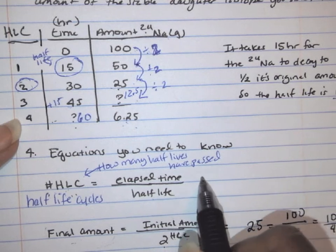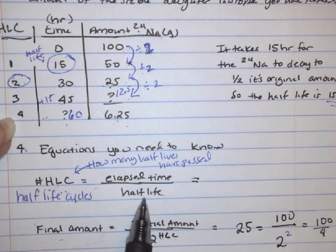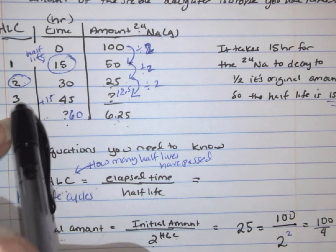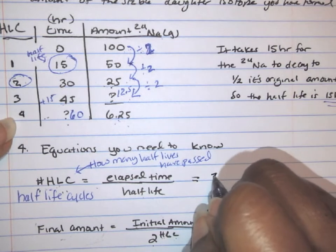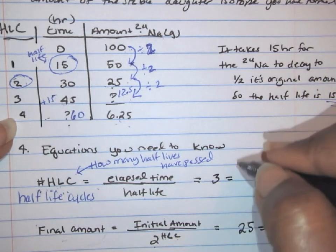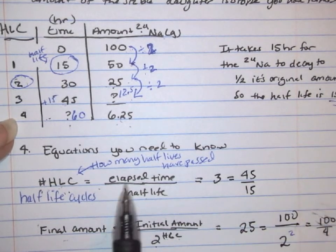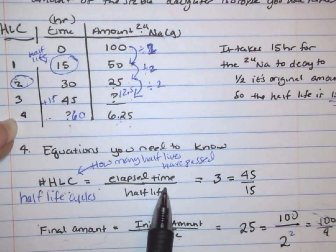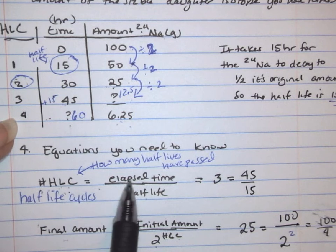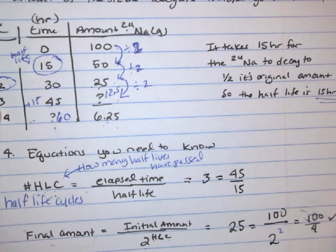To calculate Half-Life Cycles, for example at the third data point: if the Half-Life Cycle is 3, the total elapsed time is 45 hours, and the Half-Life is 15 hours — you can verify this is a true equation. They might give you two of the values and ask you to find the third. I'm not expecting you to know how to do all of this right now — this is just a preview of what you'll see later.